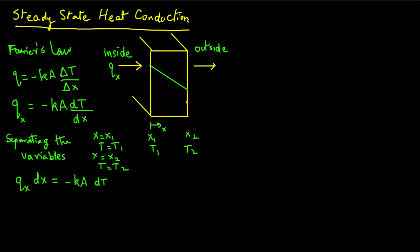We can now integrate this equation. We integrate X from X1 to X2 on the left-hand side and temperature from T1 to T2 on the right-hand side. QX is kept outside the integral on the left, and minus KA outside the integral on the right, because they are constant terms. From calculus, the integral of DX is X, so we have QX evaluated at limits X1 and X2 on the left, and minus KA with the integral of DT evaluated on the right.